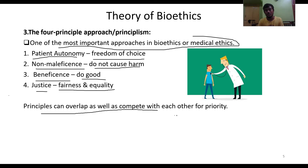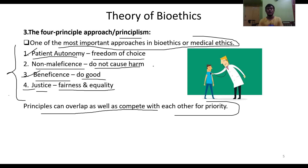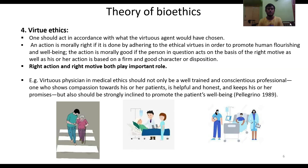There are four different principles under principalism: patient autonomy, non-maleficence, beneficence, and justice. All four are oriented toward the betterment of humans. Moving on, the last theory of bioethics to be discussed is virtue ethics.